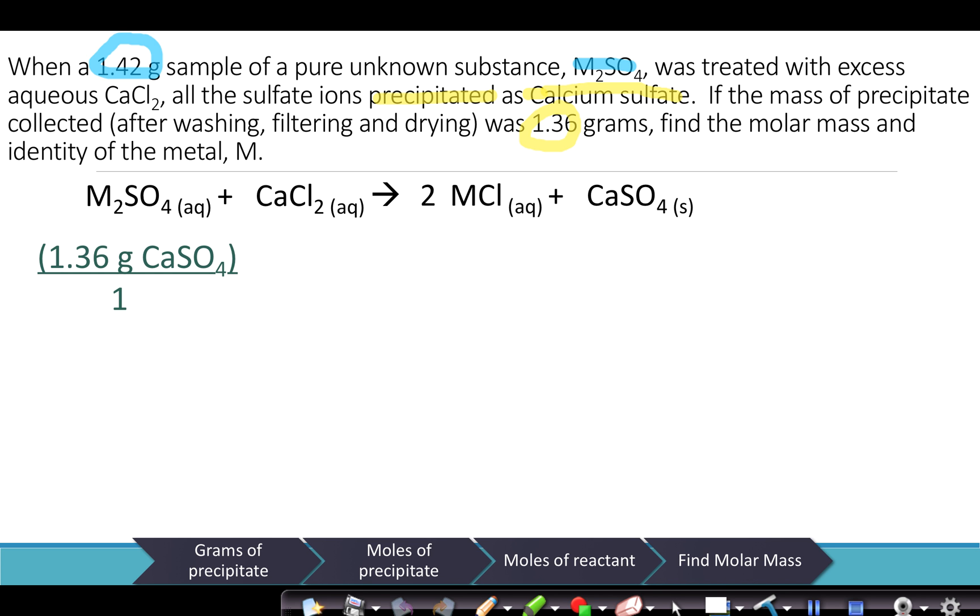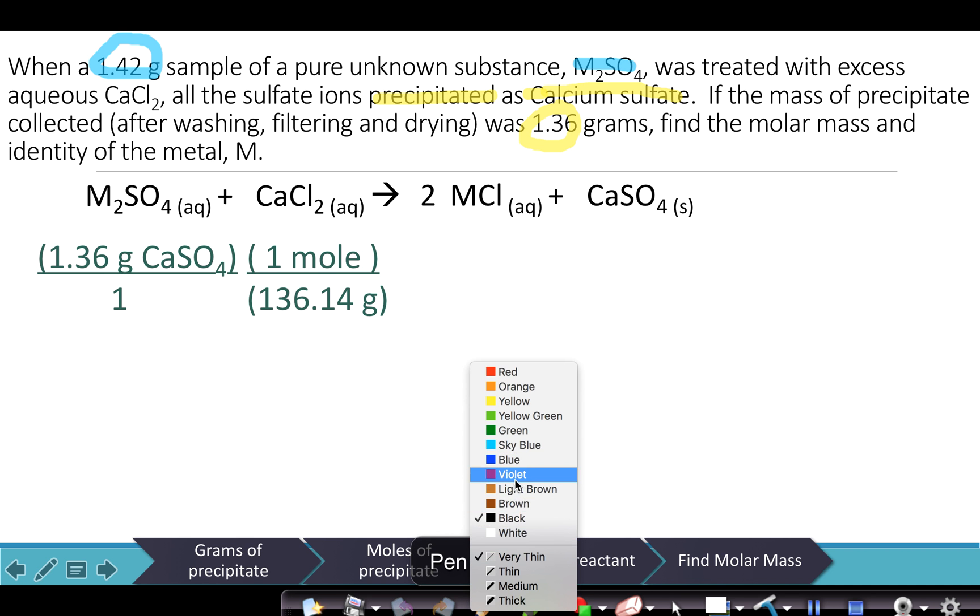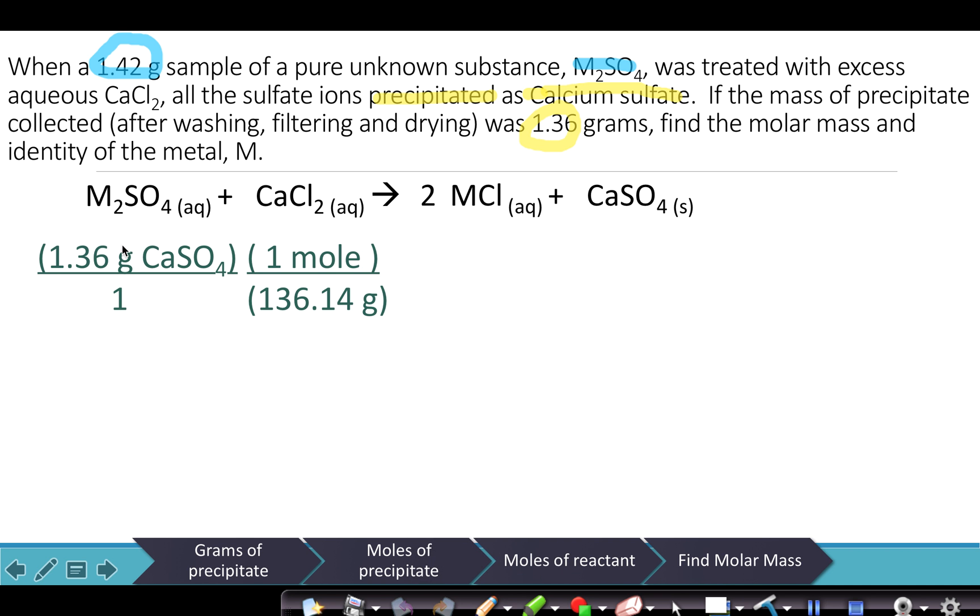Which means that we need to know the gram formula mass of calcium sulfate, and remember we're going to multiply by 1 mole over the gram formula mass, and that is going to help us cancel out our units. If you cancel while you're here, grams of calcium sulfate cancels with grams here, and right now we're in moles of calcium sulfate.